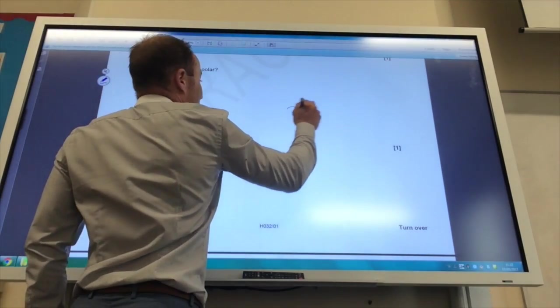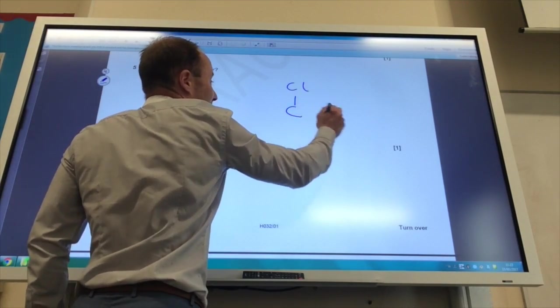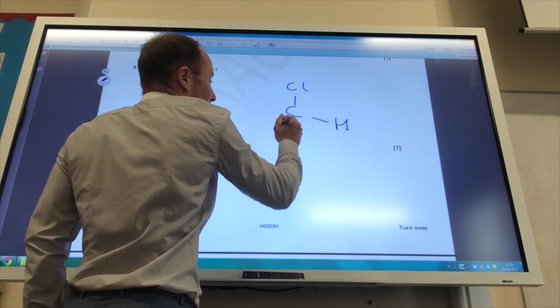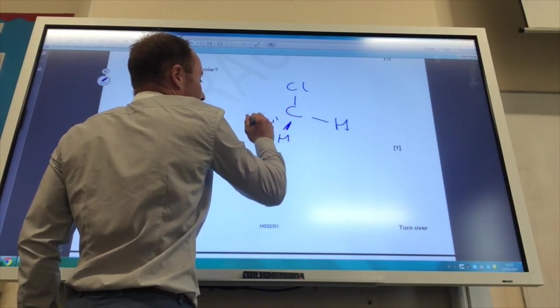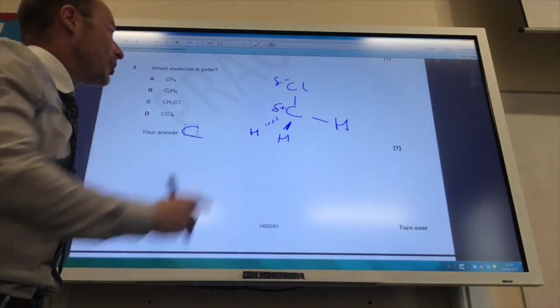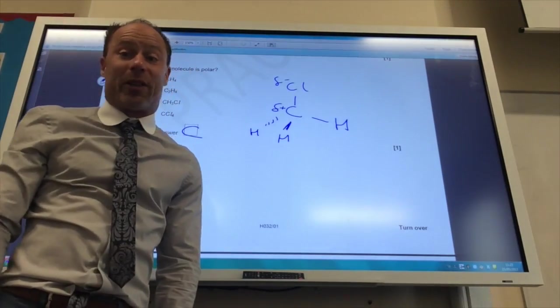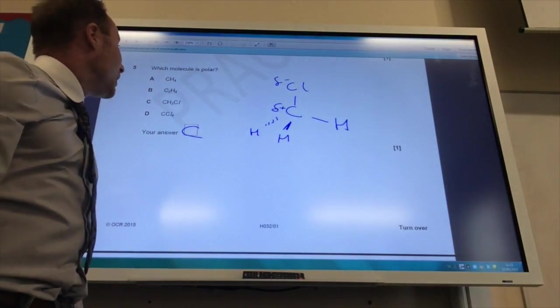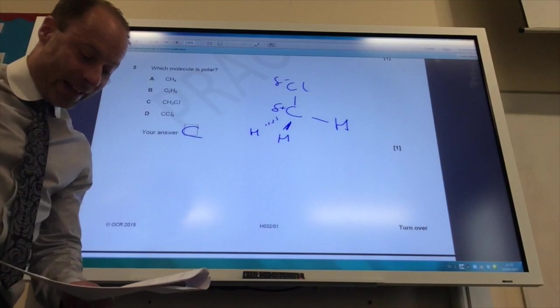Whereas for C, you've got carbon, chlorine up there, hydrogen, hydrogen, hydrogen, hydrogen. And this bond is going to be polar, delta plus, delta minus. Therefore the molecule is polar. So 5 is C.